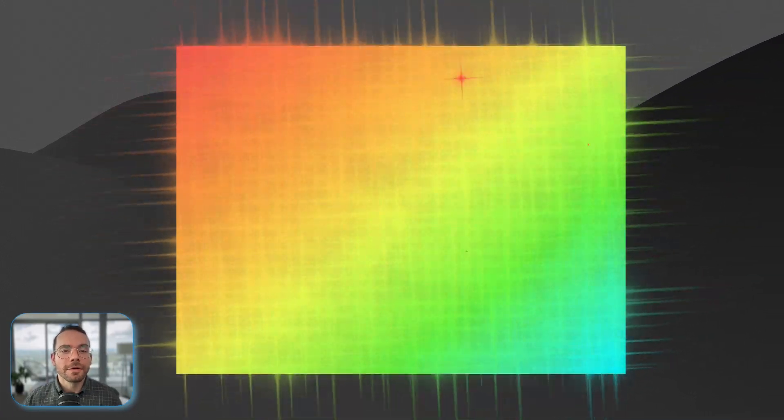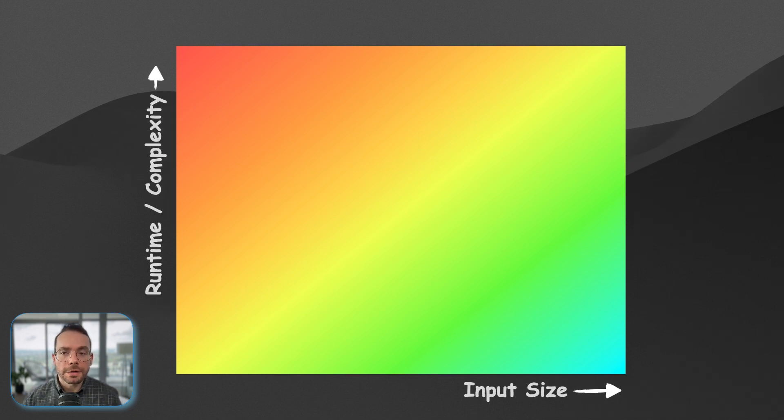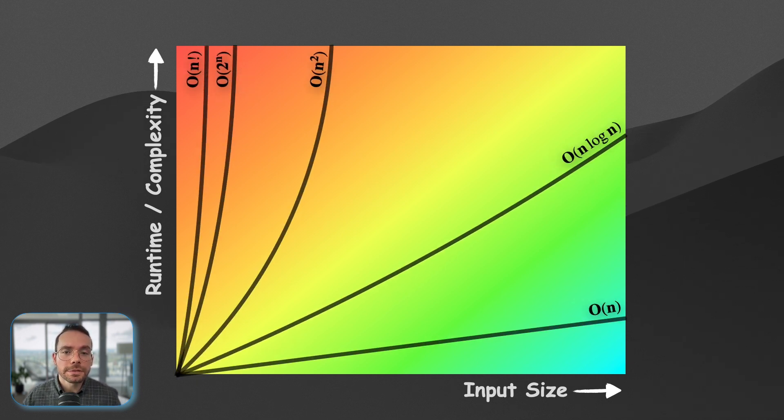On this graph, we are visualizing the relationship between runtime and input size. It's originally a smooth and continuous spectrum of algorithms. We often add boundaries to separate different complexity classes, such as big O(n), big O(n log n), n-square, and so on and so forth.